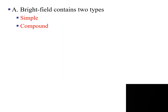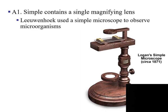The first we will discuss is bright field microscopes. Under the bright field category, we have the simple microscope and the compound microscope. We will use the compound microscope extensively in this class. The simple microscope contains a single magnifying lens — this is an example of the type of microscope that Leeuwenhoek used to observe his animalcules, or very small microorganisms. It only uses one lens, sort of like using a magnifying glass.